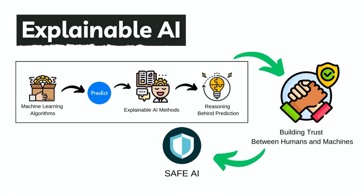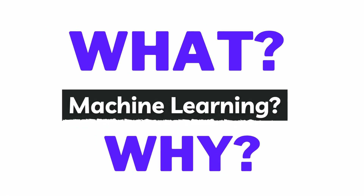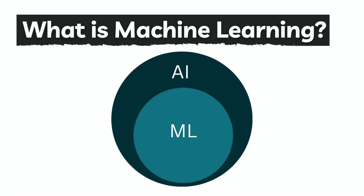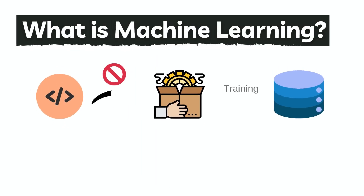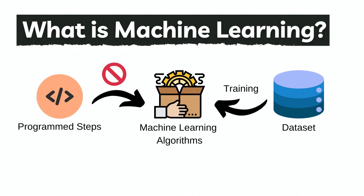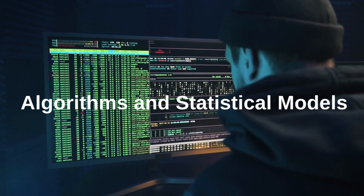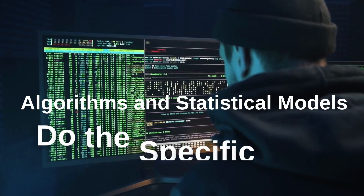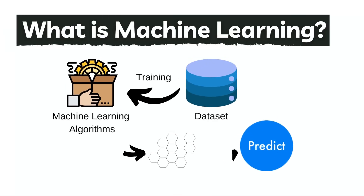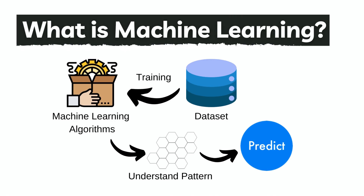So in this whole course, everything is focused on the explainable AI format. Now let's start with our second question: what and why is machine learning? Machine learning is a subset of artificial intelligence that enables computers to learn and improve from experiences without being explicitly programmed. It's all about the algorithms and statistical models that allow the system to perform a specific task and make accurate predictions based on data patterns.